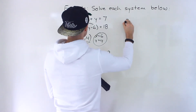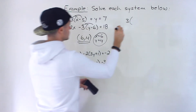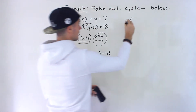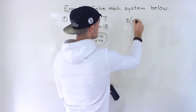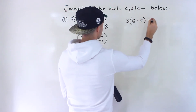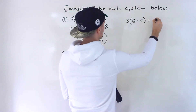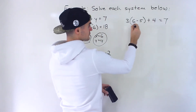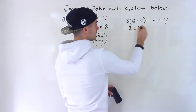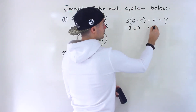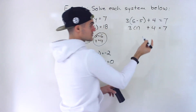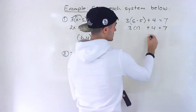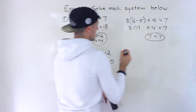Let's check with the first original equation. Plugging in 6 for x: 3 times (6 minus 5) plus the y value of 4 should equal 7. We do the bracket first: 6 minus 5 is 1. Then 3 times 1 is 3, plus 4 gives 7. So 7 equals 7 — that checks out.